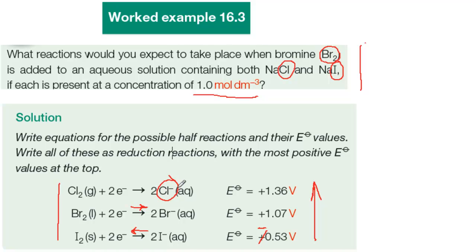Second, E standard values only tell you about the thermodynamic feasibility of the reaction, but nothing about its kinetic feasibility. So you might predict that a reaction would be feasible and find it doesn't work in practice because it's kinetically very slow.